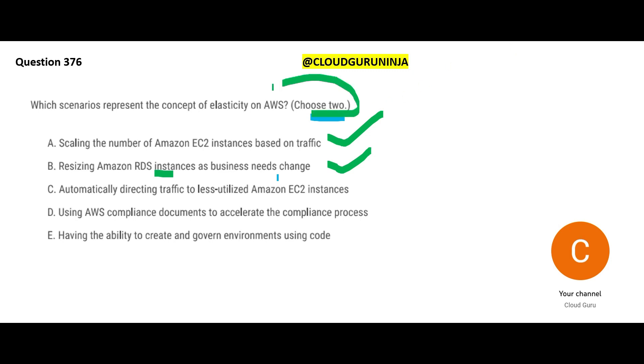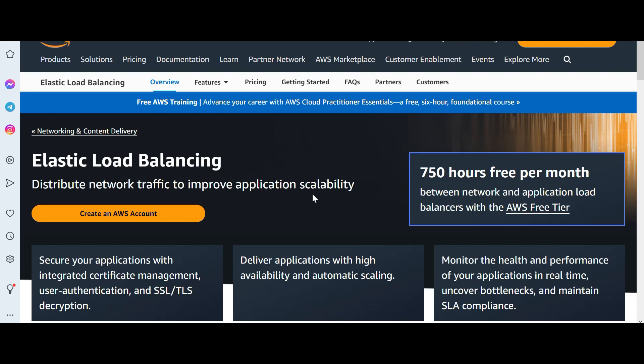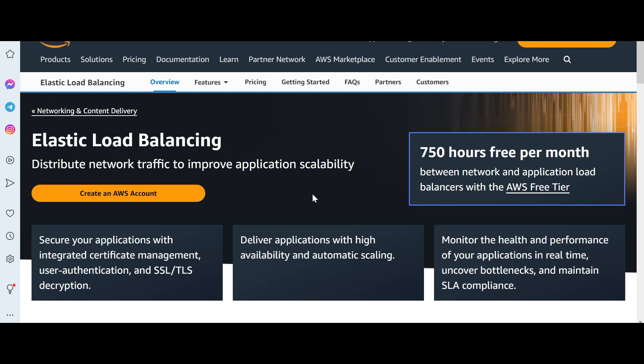We wanted to choose two answers and we have chosen them, but let us still look at the other options. Option C is automatically directing traffic to less-utilized EC2 instances — this is an example of load balancing, not elasticity. It is just like a team lead who has five people and ensures the work split is consistent across those five people so nobody is overburdened or underutilized.